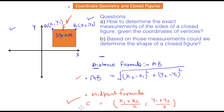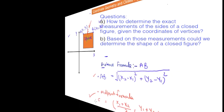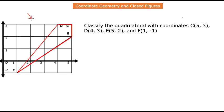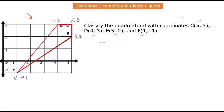With this knowledge, we are going to proceed to how you use the distance formula and midpoint formula to determine the side lengths of any polygon or quadrilateral and then determine what kind of shape it is. In our first example, we are given a quadrilateral on an XY coordinate plane with four vertices C, D, E, and F. We are given the coordinates of each vertex and need to classify what kind of quadrilateral it is.